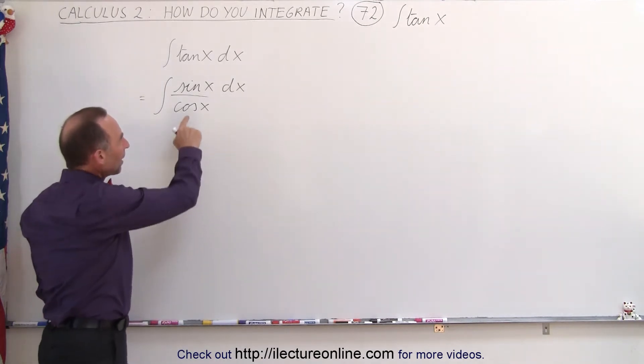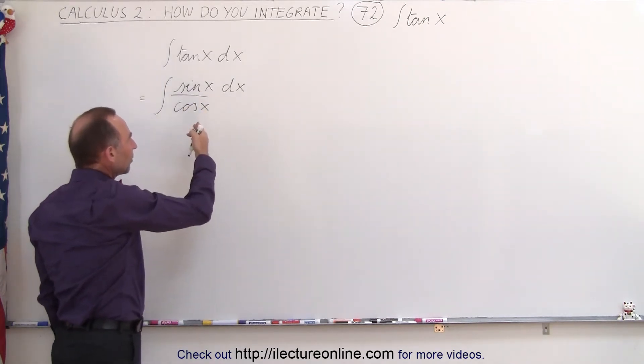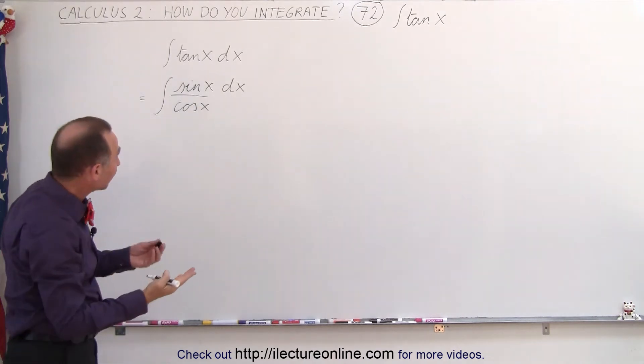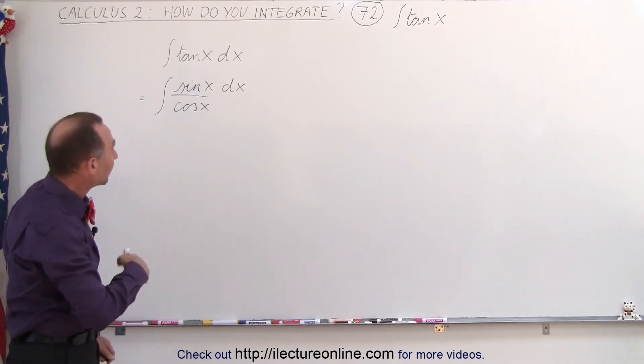Now, if you look at the denominator, and then you look at the numerator, you can see that the numerator is, in essence, kind of the derivative of the denominator. In other words,